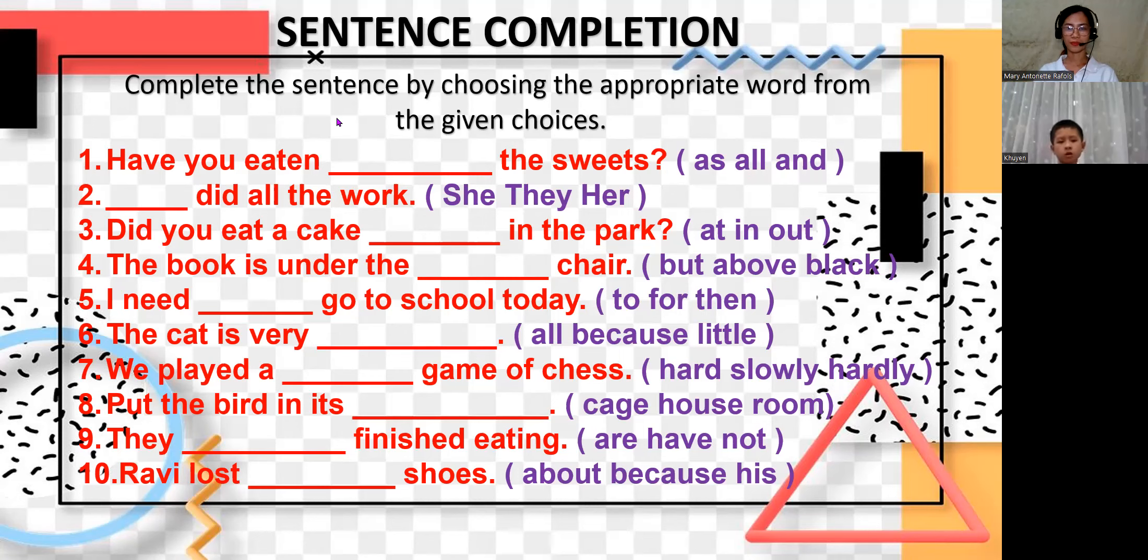Let's start sentence number one. Have you eaten? Which here, all or and? I can use all. Very good. Have you eaten all the sweets? Good job. Now let's go to sentence number two. She did all the work. She did all the work is correct.